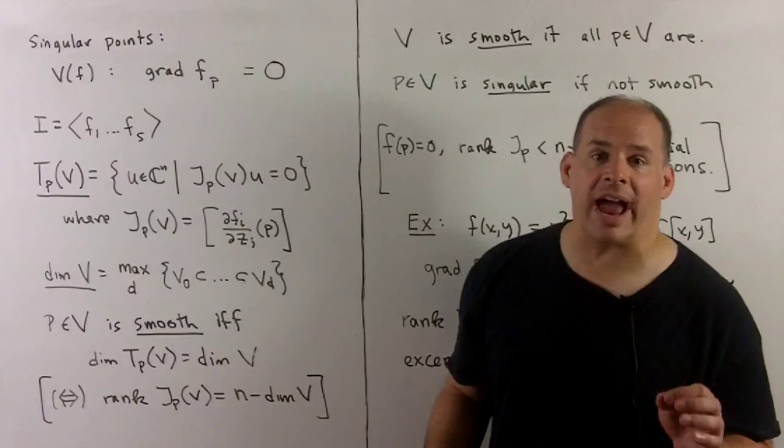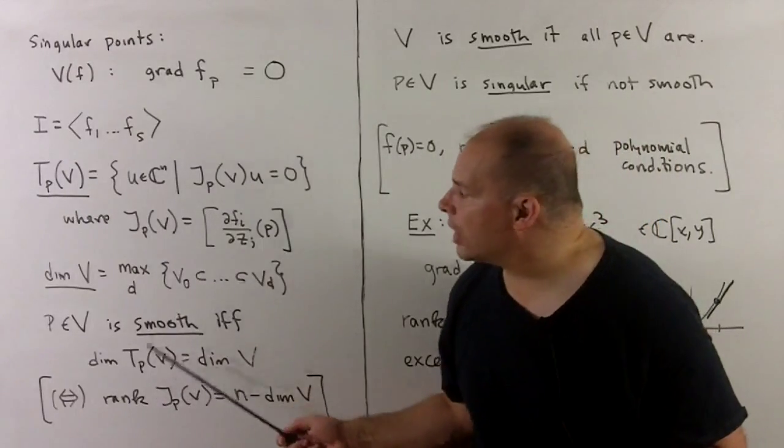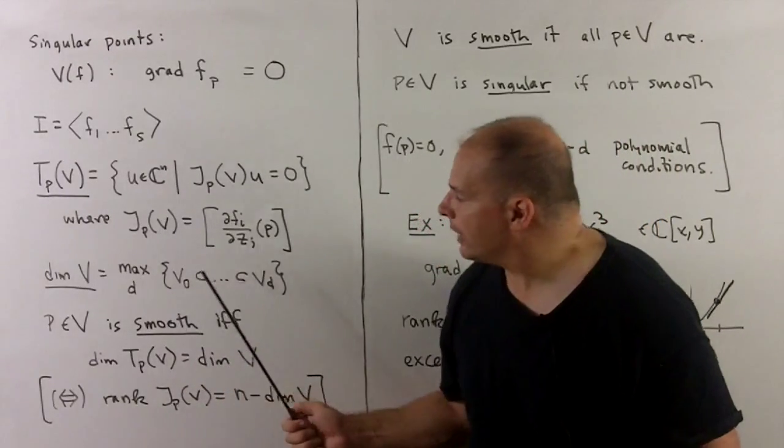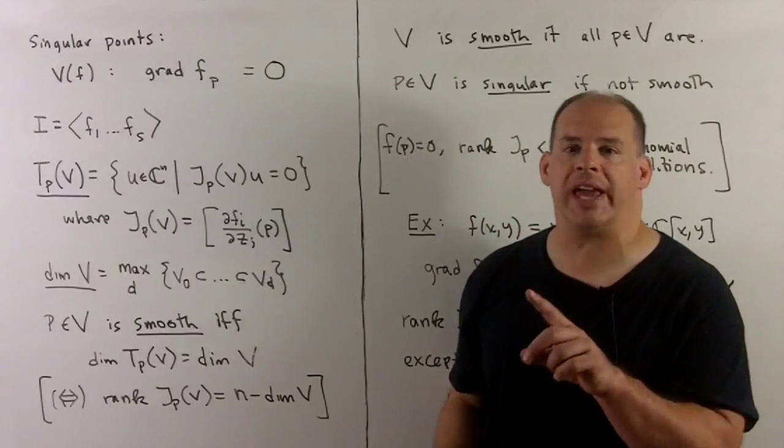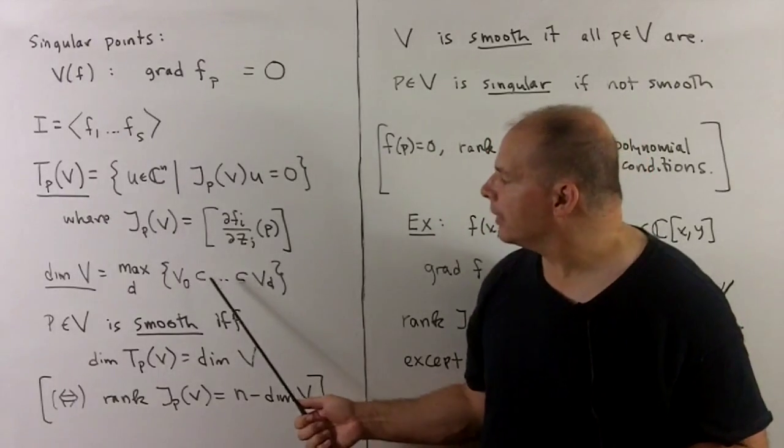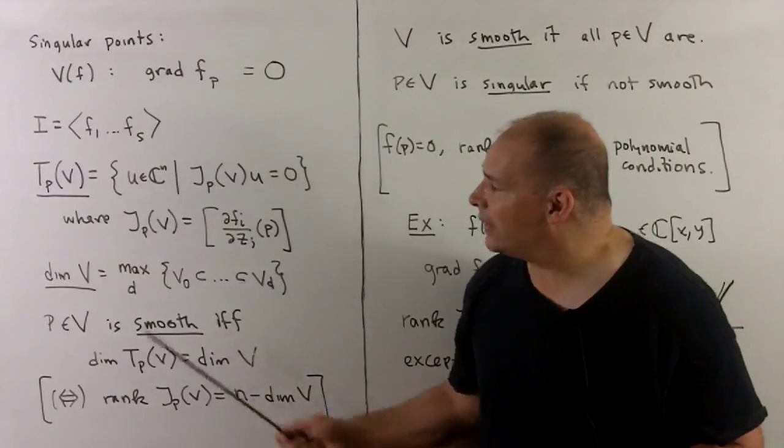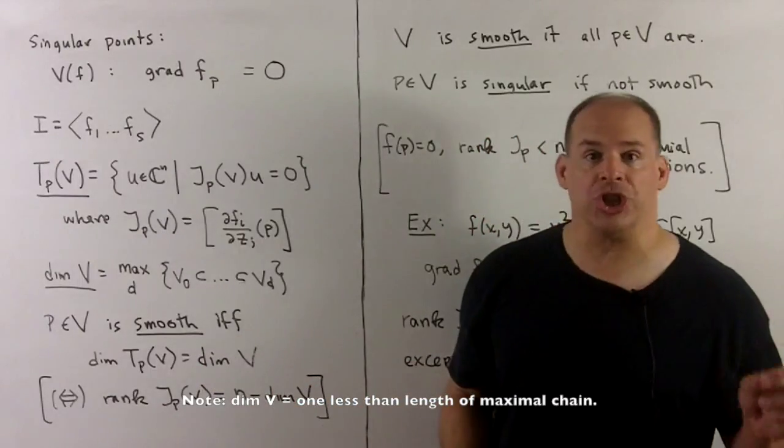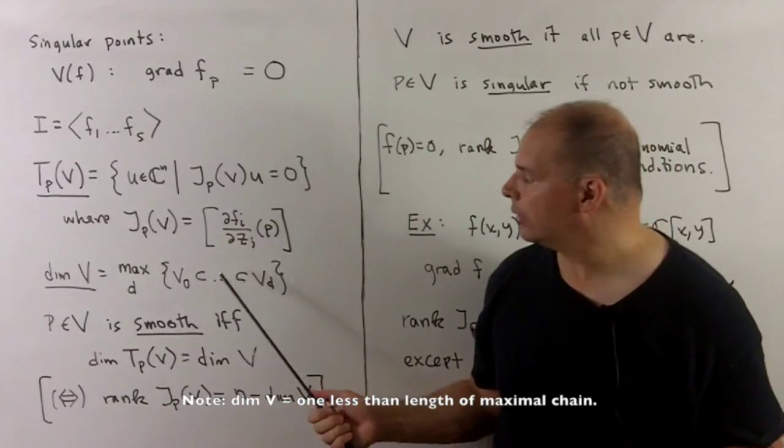We can now define smoothness and singularity. First, the dimension of V: we'll consider all chains of varieties inside of V under inclusion, and then the dimension is going to be the length of the longest chain.